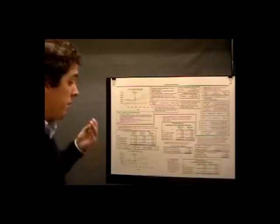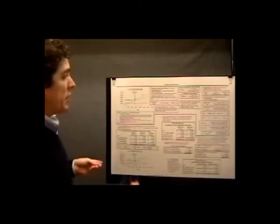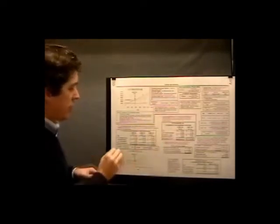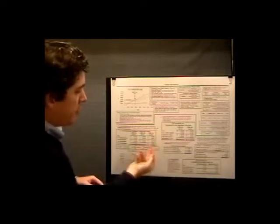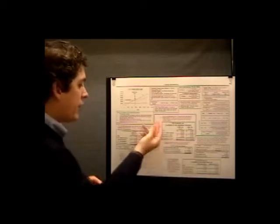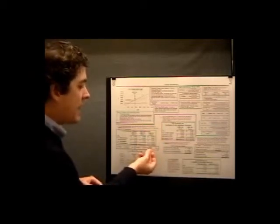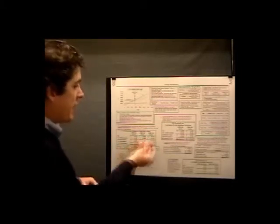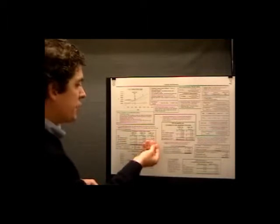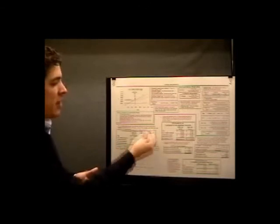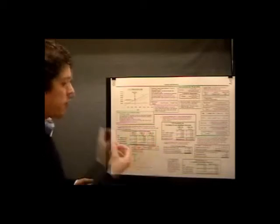Now let's calculate the contribution margin ratio — we can do it on a per unit basis and on a total basis. On a total basis at the 8,000 level, contribution margin equals $32,000 and total sales equals $80,000, so that gives us 40%. On a per unit level, we take the contribution margin of $32,000 divided by 8,000 units, that gives us $4. And then total sales divided by total units is $10. So either way — total or unit basis — we get 40%.